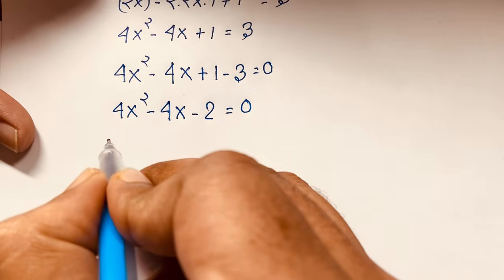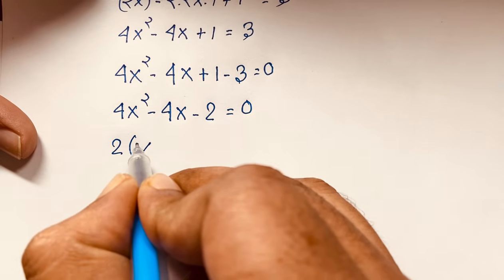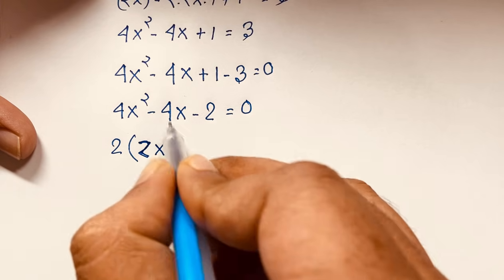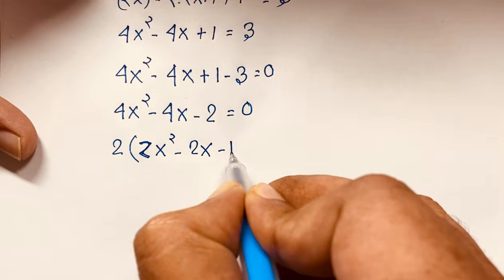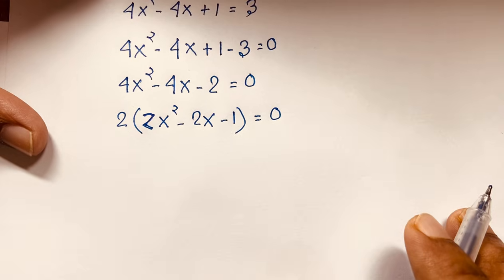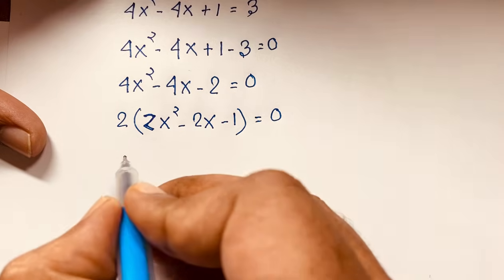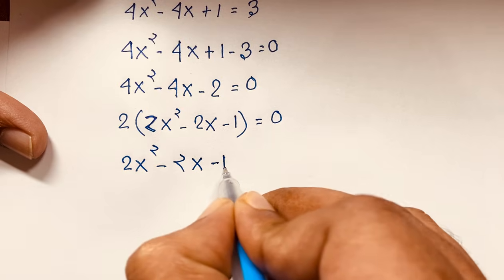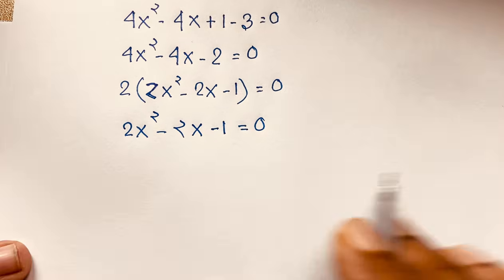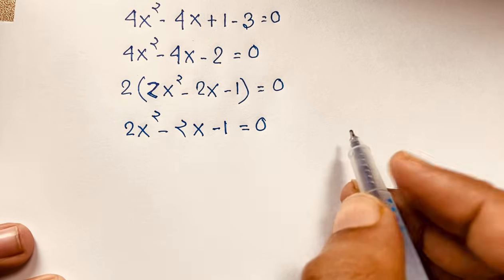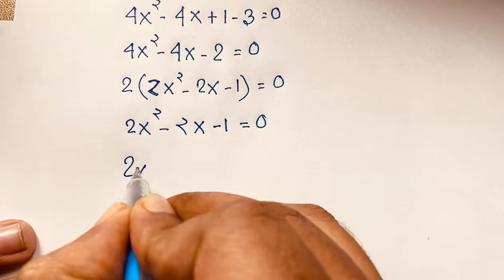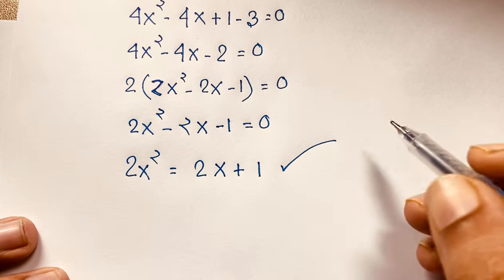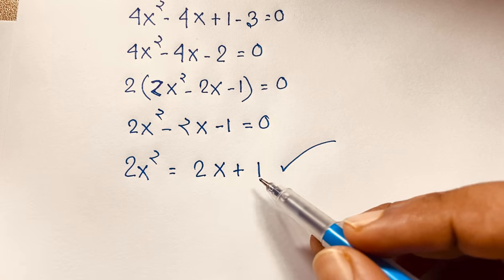Dividing both sides by 2 gives 2x² minus 2x minus 1 equals 0. Moving terms to the right side: 2x² equals 2x plus 1. So we have the key relation: 2x² = 2x + 1.